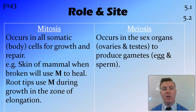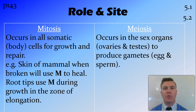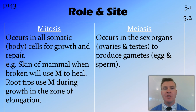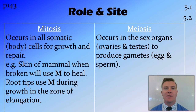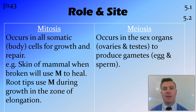An example of growth is in root tips. As the root grows, there is a part of the tip just behind the cap called the zone of elongation, and this is where mitosis occurs, pushing that root cap through the soil as it grows.